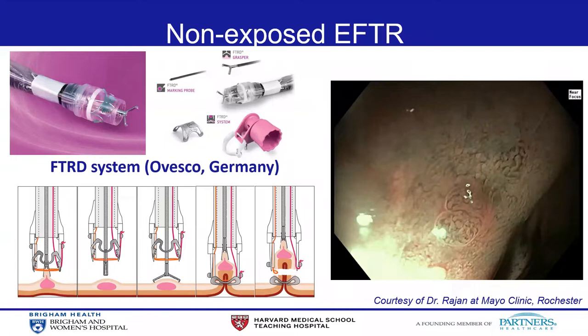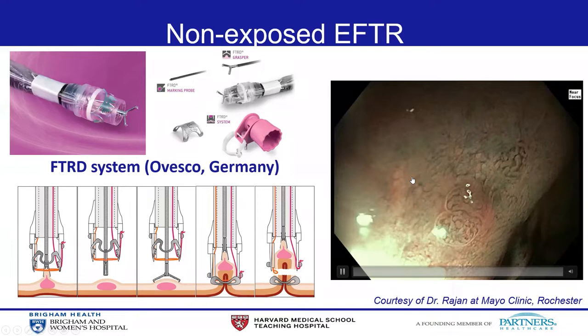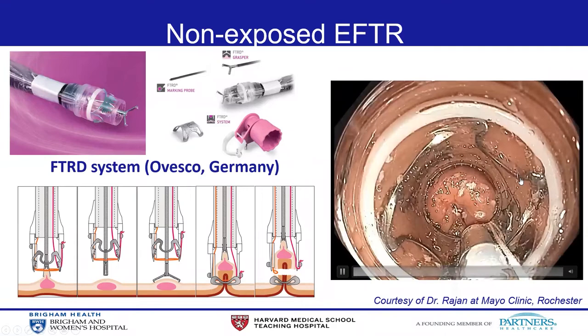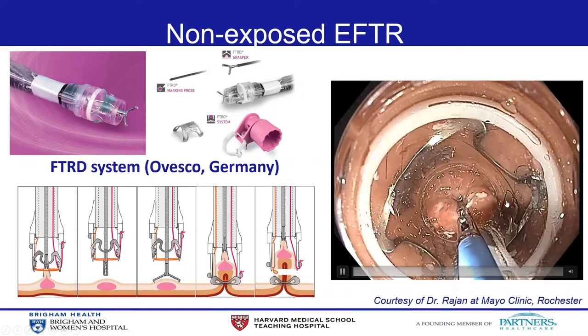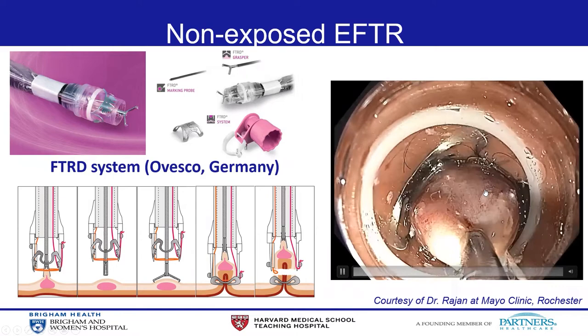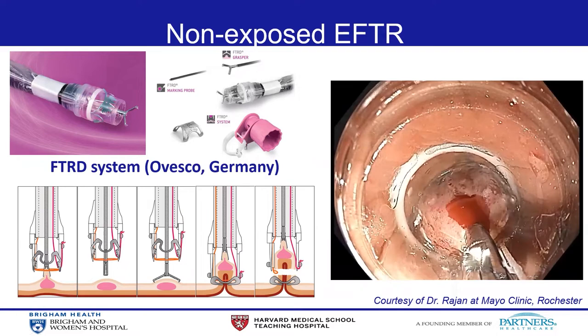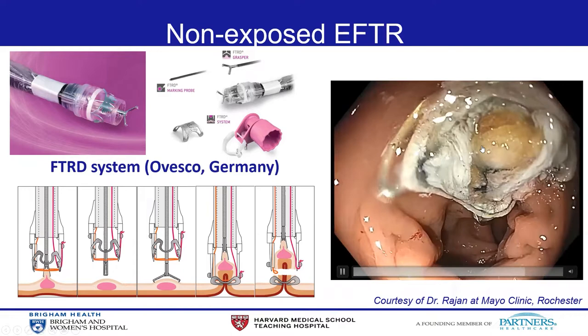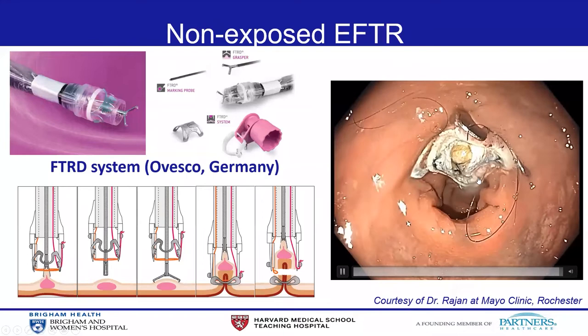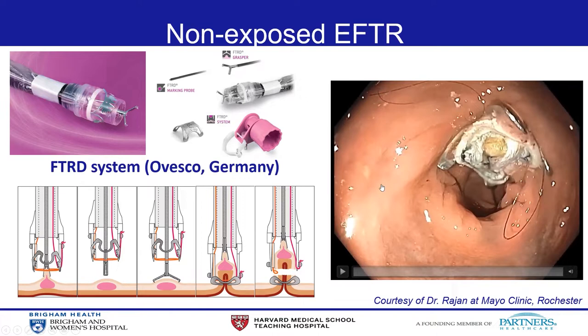I'm going to show the device we currently use for non-exposed EFTR. This is called the FTRD system, developed by Ovesco, which incorporates the 21mm Ovesco clip with a hot snare. The procedure starts with full-thickness plication using the Ovesco clip, followed by full-thickness resection with the hot snare. Here is a case video showing local recurrence of high-grade dysplasia in the sigmoid colon. Following marking, the target lesion is pulled into the system using a grasper, the Ovesco clip is deployed, and the lesion is removed. The full-thickness resection defect is visible, and the Ovesco clip has completely closed the defect.